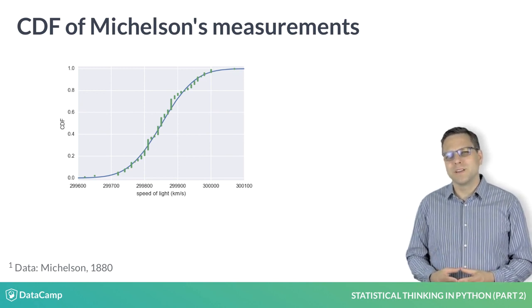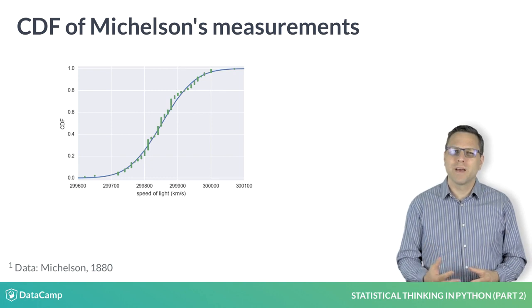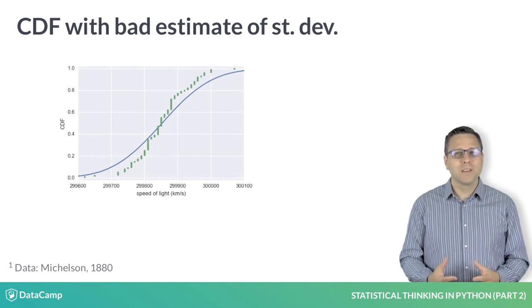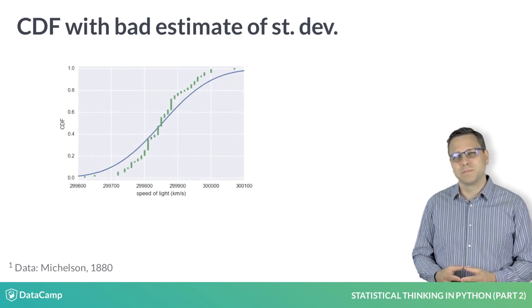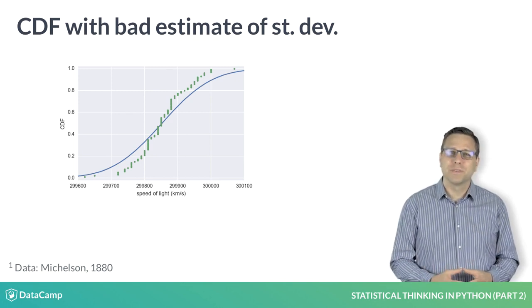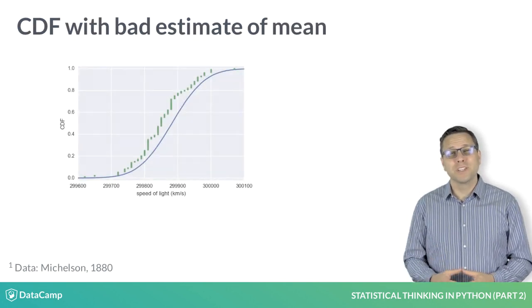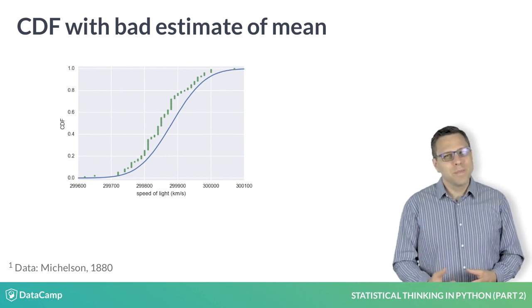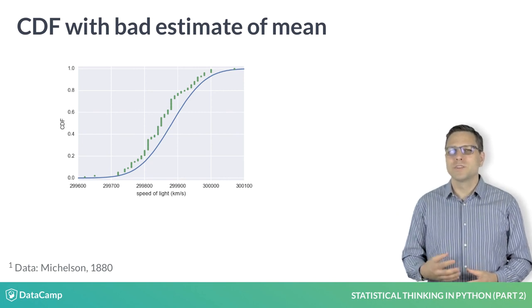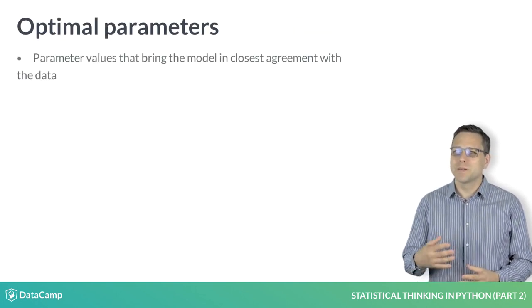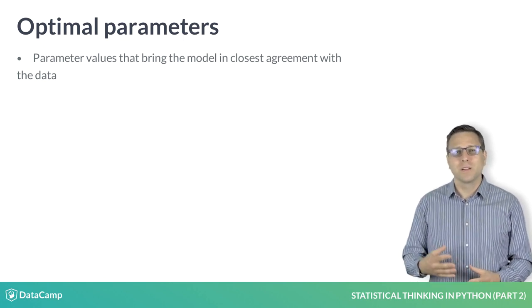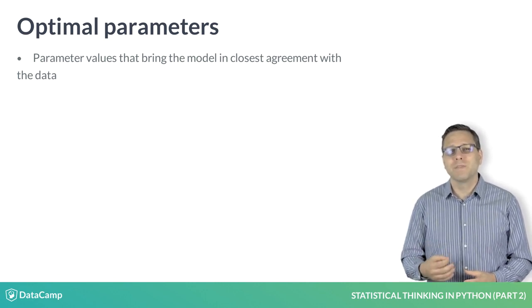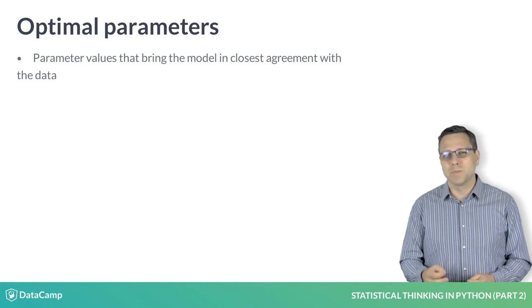How did we know that the mean and standard deviation calculated from the data were the appropriate values for the normal parameters? We could have chosen others — what if the standard deviation differs by 50%? The CDFs no longer match. Or if the mean varies by just 0.01%? So if we believe the process that generates our data gives normally distributed results, the set of parameters that brings the model — in this case the normal distribution — in closest agreement with the data uses the mean and standard deviation computed directly from the data. These are the optimal parameters.